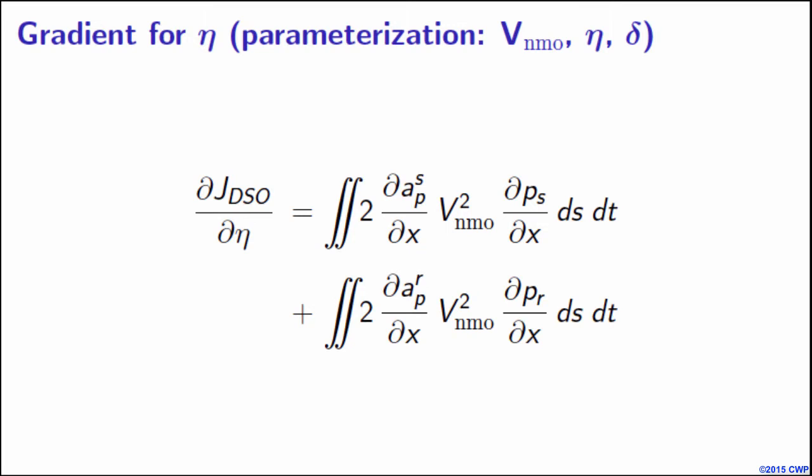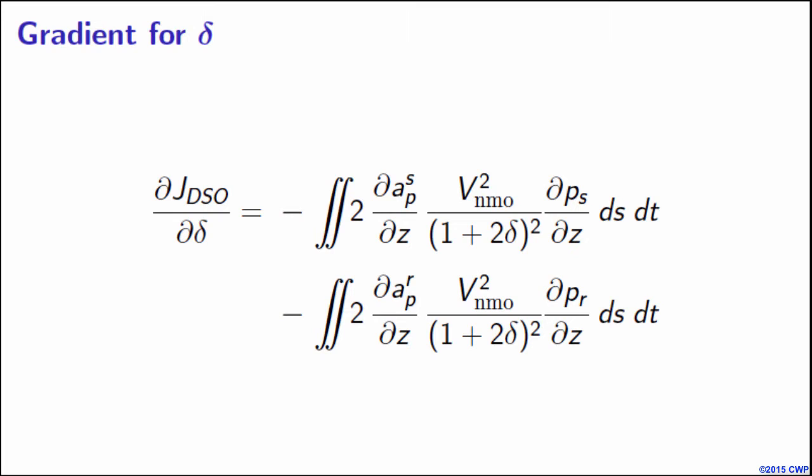Now let's look at the gradient for delta. This one depends not only on the background value of V_NMO but on the background value of delta itself and involves vertical derivatives. Again, what it tells us is there is a trade-off between V_NMO and delta in the vertical direction, which was well known by many studies of radiation patterns, for example the one done by Tariq and Renepli-C.